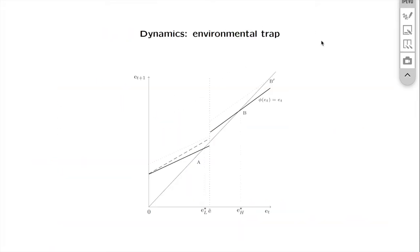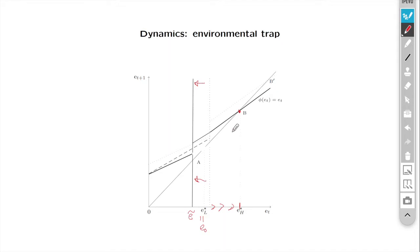What are the economic mechanisms that make the economy escape the trap? The idea is that environmental quality is now associated with high life expectancy, so individuals care more about the future, and they are willing to invest more in environmental quality. This accumulates and you get to the high steady state. That is how we eliminate the trap, but there are other ways.